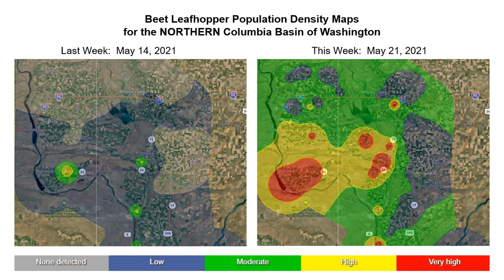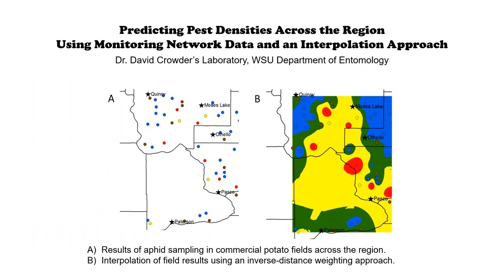Insect populations also vary spatially and temporally within a season. These maps show beet leafhopper densities or population abundance as they vary across the North Columbia Basin. The numbers of insects increase as the color shifts from gray to blue to green to yellow to red. I like to present these maps to growers in a time series — showing last week's map next to this week's map — to illustrate change in pest densities and distribution. We use an interpolation method called inverse distance weighting to create these maps. For any given spot, a weighted average of insect numbers is calculated using our monitoring network data. The closest sites give greater weight to the estimate, but all sites factor into the prediction — and it works very well.